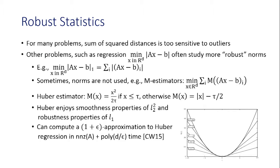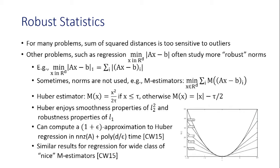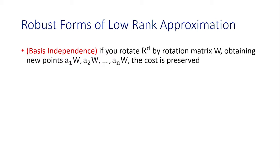For regression with M-estimators, you can compute a (1+ε) relative-error approximation in time proportional to the number of non-zero entries of A plus poly(d/ε). Typically in over-constrained regression, d is much smaller than n, and this is an acceptable running time. You can also generalize this to a wide class of nice M-estimators. So we see that robust statistics has met regression. What about robust forms of low-rank approximation?